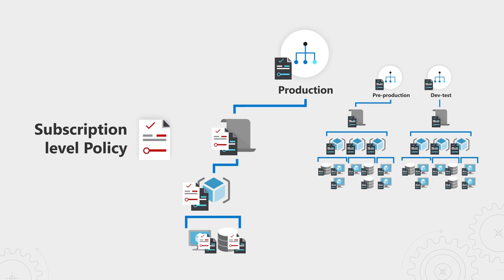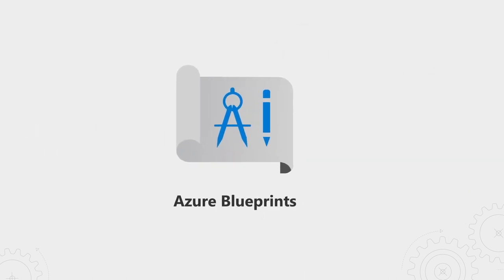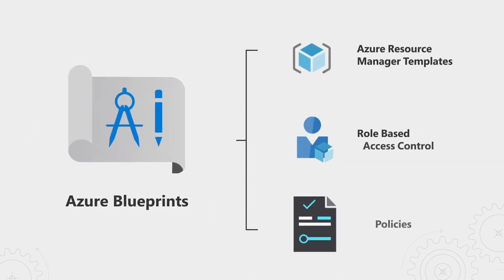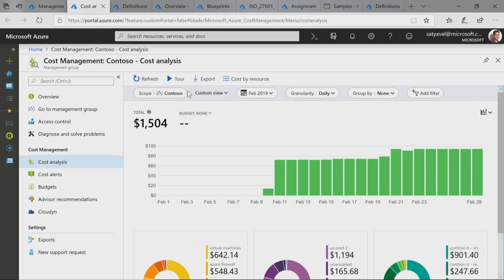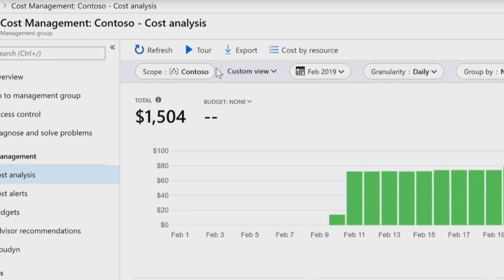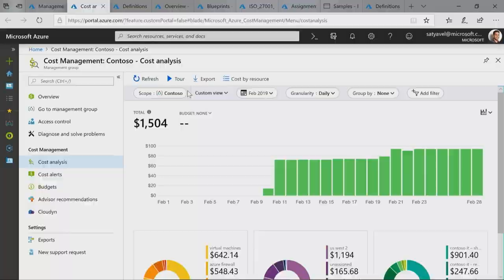As part of that, you can establish Azure Blueprints, which comprise a combination of Azure Management templates to provision resources, role-based access controls, and policies. And finally, you can oversee and set budget thresholds using capabilities within Azure Cost Management. These capabilities combined help you establish a working model for governance across your organization.